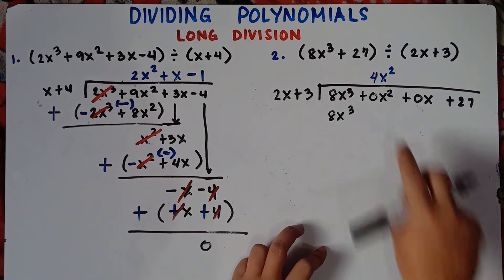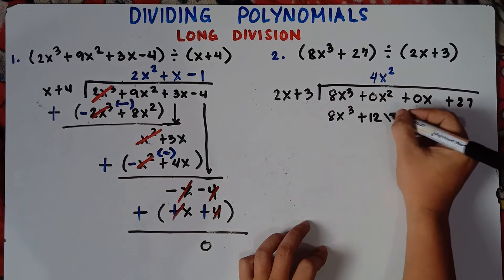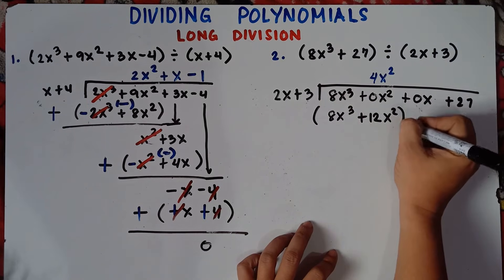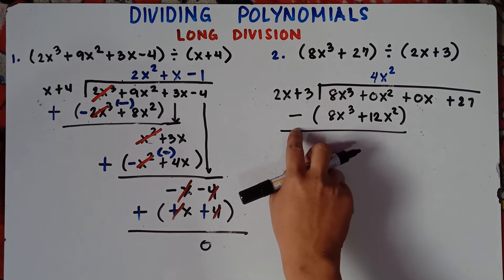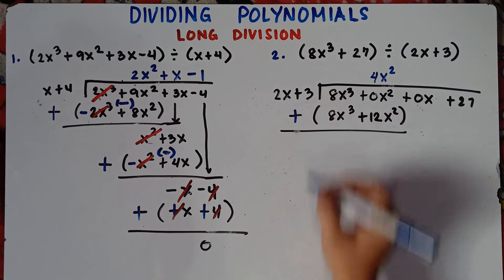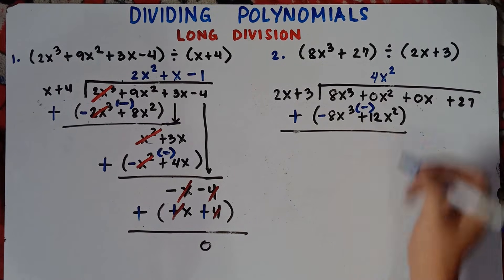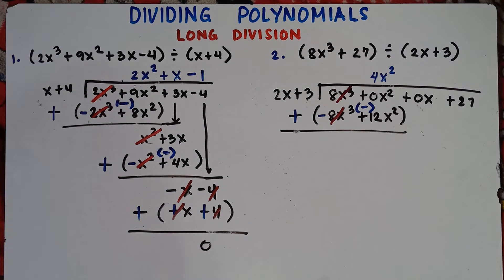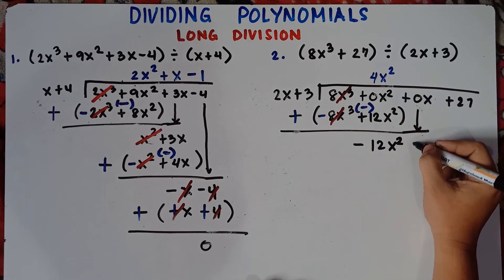Subtract, putting parentheses since this is a binomial. Change the sign of the subtrahend: 8x³ becomes −8x³ and 12x² becomes −12x². 8x³ − 8x³ cancels to 0. Then 0x² − 12x² gives −12x². Bring down 0x.